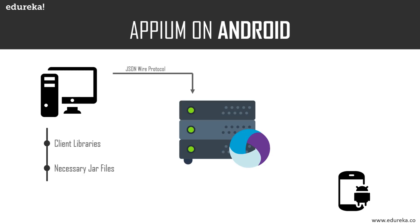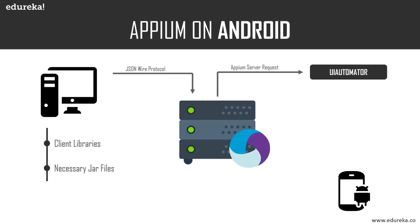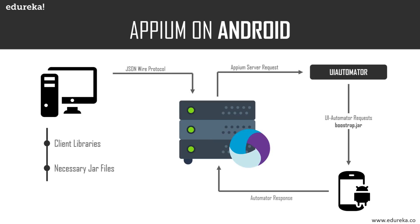After that, the Appium server creates an automation session for the client, checks the desired capabilities, and connects with the respective vendor-provided framework — in this case, UI Automator. The UI Automator then communicates with bootstrap.jar, which is running on the simulator, emulator, or real device. bootstrap.jar plays the role of a TCP server, which is used to send test commands to perform actions on the Android device using UI Automator. After the test scripts have been executed, the test results are sent back to the server using an automator response via the JSON wire protocol, and then the server sends them back to the client as server responses or log files.